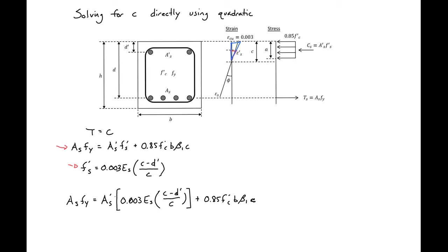The next thing that we need to do is rearrange this expression to isolate C in the form of a quadratic. So we'll rearrange and we can have 0.85 F prime C times B times beta 1, and all this times C squared.